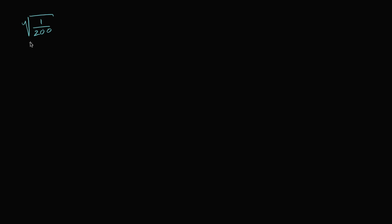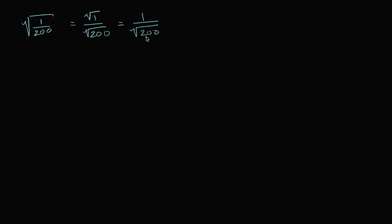There are a couple of ways you could approach this. One way is to say this is going to be the same thing as the square root of one over the square root of 200. The square root of one is just one, so we get one over the square root of 200.